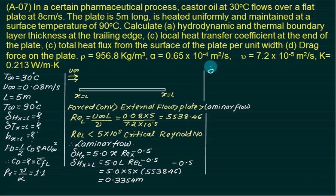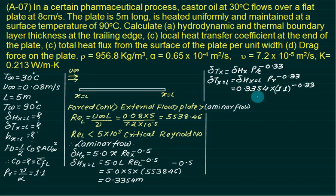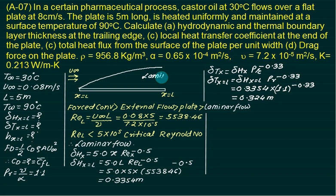From the same table, the thermal boundary layer thickness is: delta_tx = delta_hx × Pr^(−0.33). Substituting delta_hx = 0.3354 and Pr = 1.1, we get: delta_tx = 0.3354 × (1.1)^(−0.33), which gives the thermal boundary layer thickness at the trailing edge as approximately 0.324 meters.